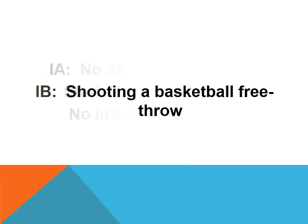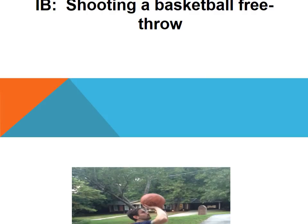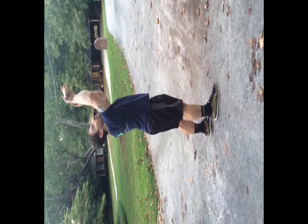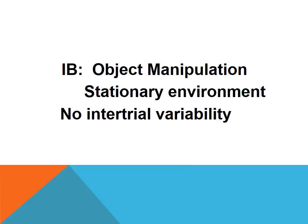Moving on to 1B: while standing in place, practice shooting a free throw with a basketball. Here, the performer and environment are still stationary; however, we have added object manipulation.